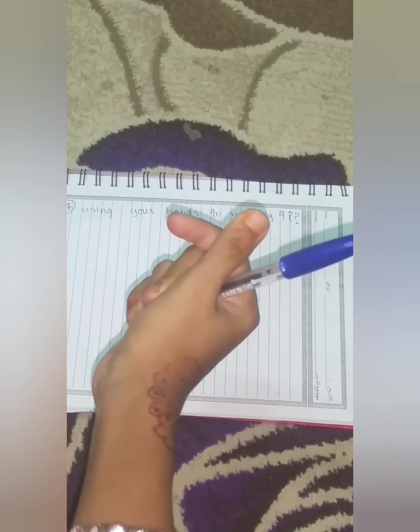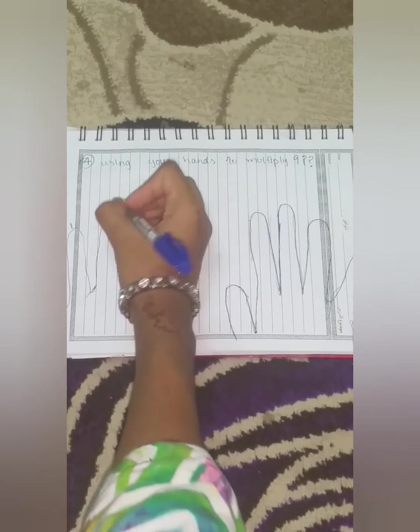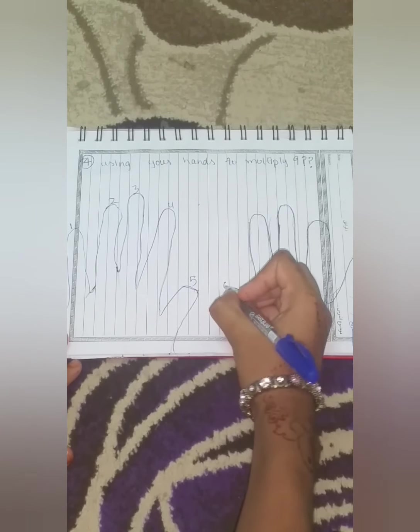First of all, we will draw the hands on the paper like this. So after drawing, we will number the fingers of our hands something like this.